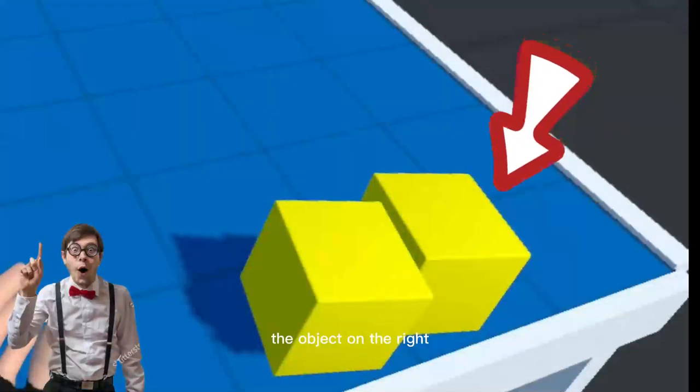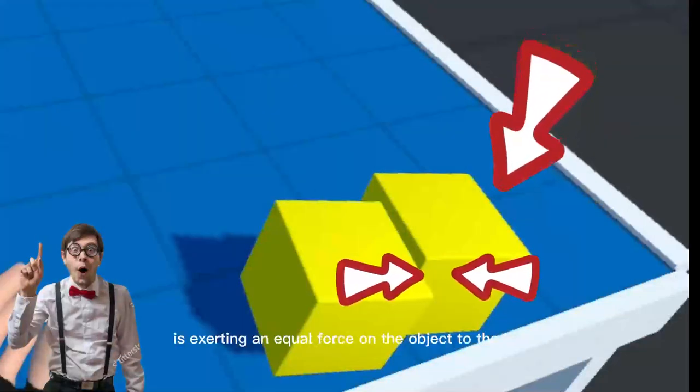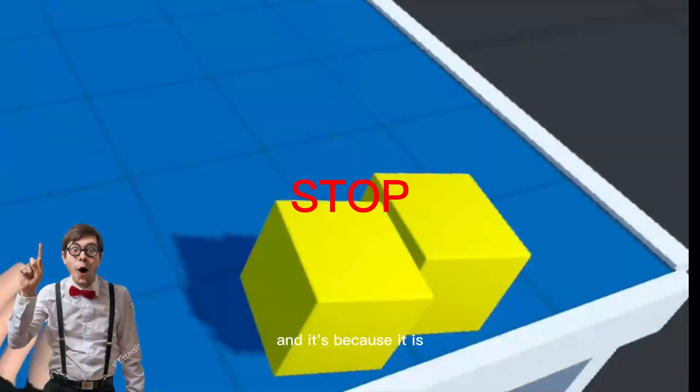The object on the right is exerting an equal force on the object to the left, causing it to stop in its tracks. It's exerting an opposite force on both ends, causing them to both stop.